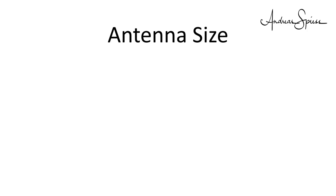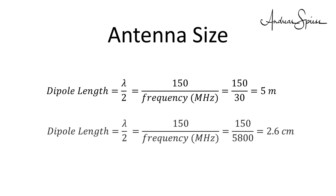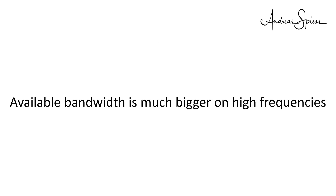Another aspect is antenna size. Antennas are needed to transfer signals into space. The lower the frequency, the longer the antenna. A typical dipole for 30 MHz is around 5 meters long. The same antenna for 5.8 GHz is only 2.6 cm long. The aspect of available bandwidth will be covered later. In this respect, high frequencies are much better.